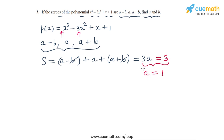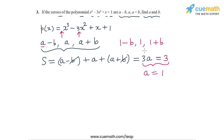We have found the value of one of the two variables. This means we can now write the three zeros as 1-b, 1, and 1+b, substituting a = 1. So the three zeros of p(x) are 1-b, 1, and 1+b.